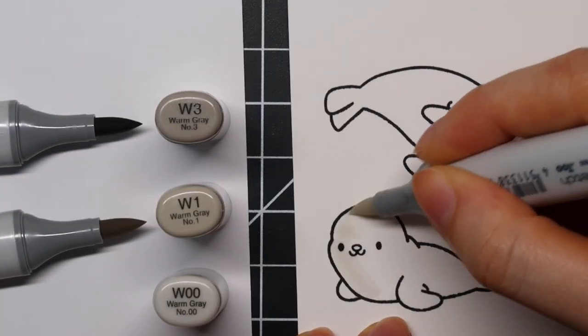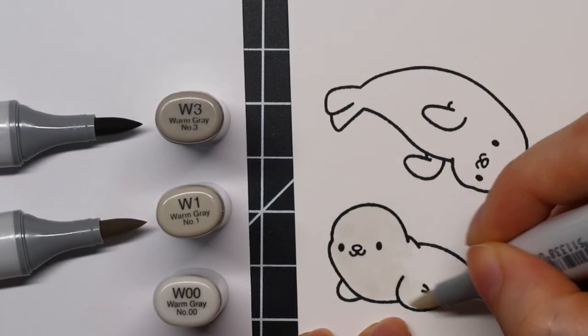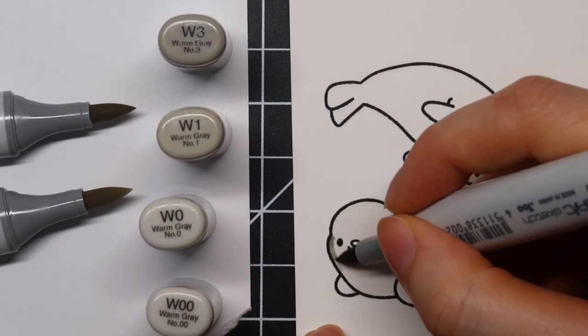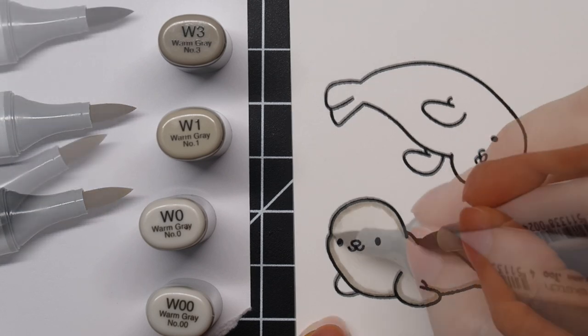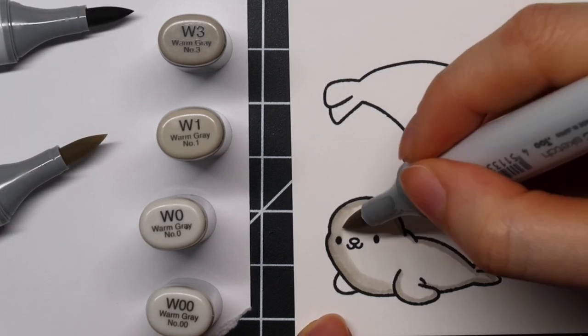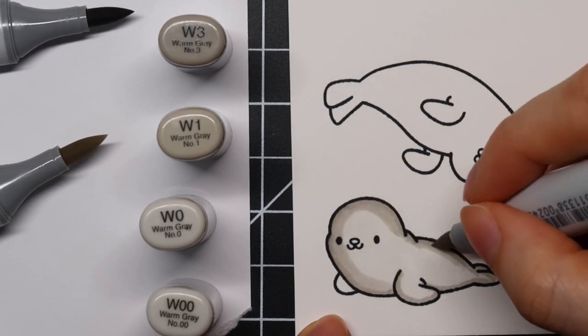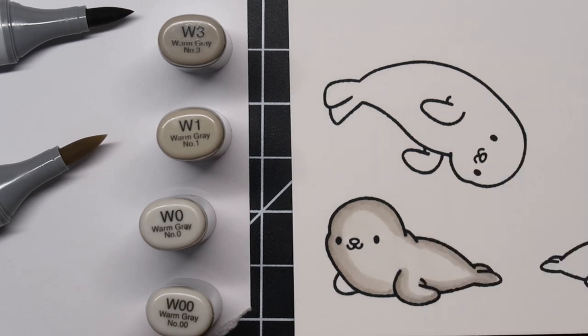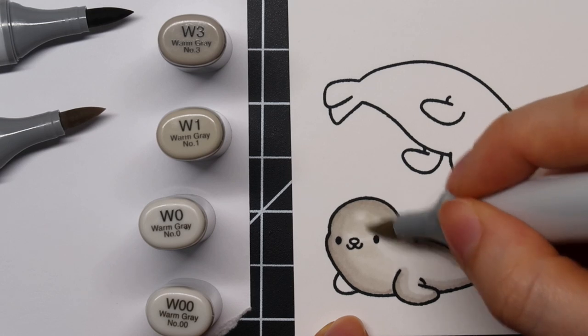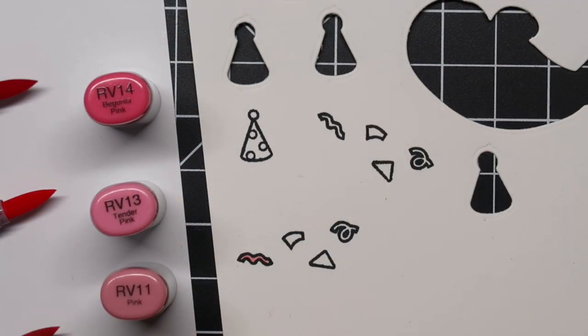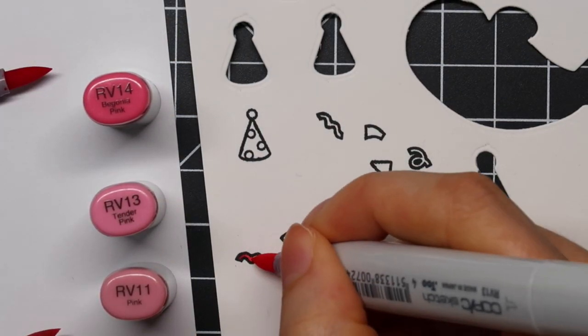I'm starting out by coloring all of these images using Copic sketch markers. I stamped these images on Neenah's solar white 110 pound heavy cardstock using Memento Tuxedo Black ink. For these little seals, I'm using some W shades. I'm using W3, 1, 0, and 00.